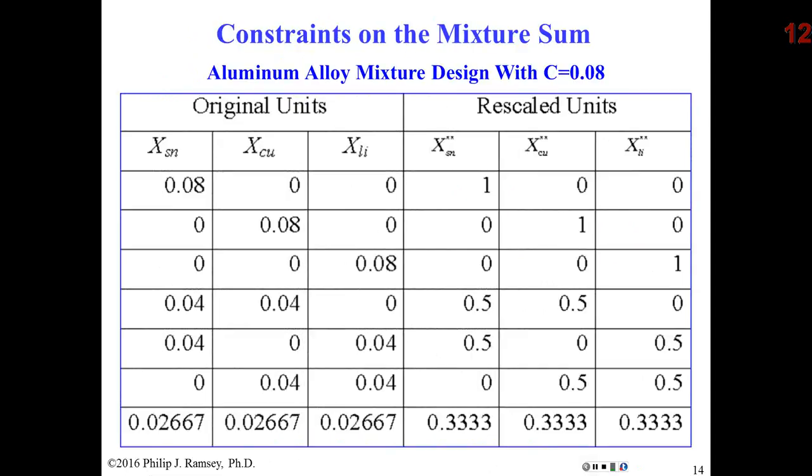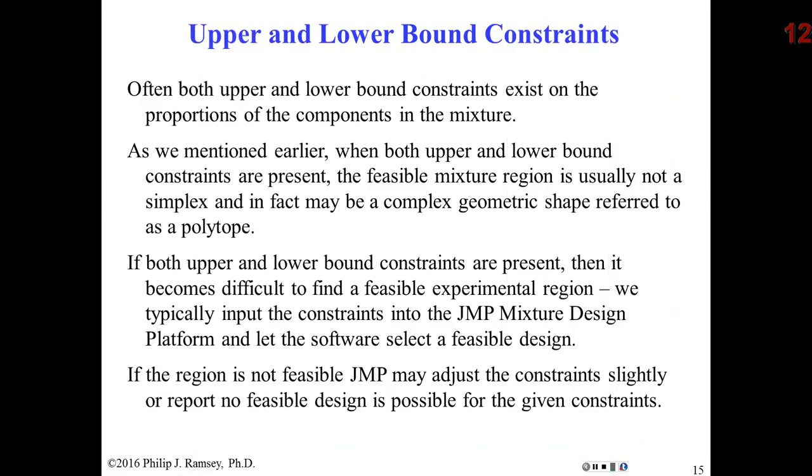Okay, so again, on the left is the original units that you would work in. Again, the experimenter would assume 92% is aluminum. And notice the rescaled units are, once again, a simplex centroid. So we can go ahead and do our analysis in the usual way.